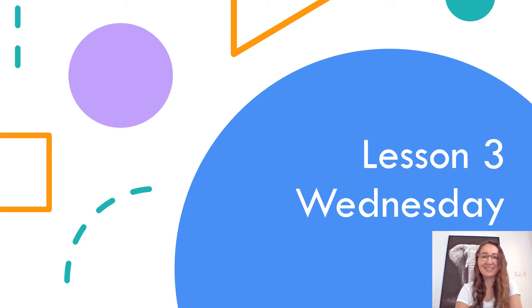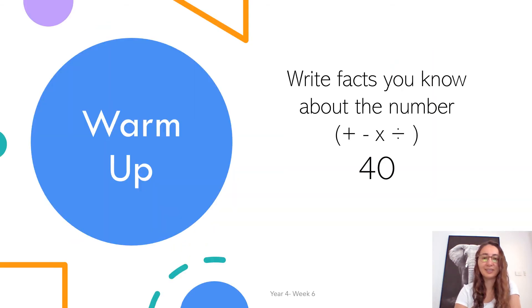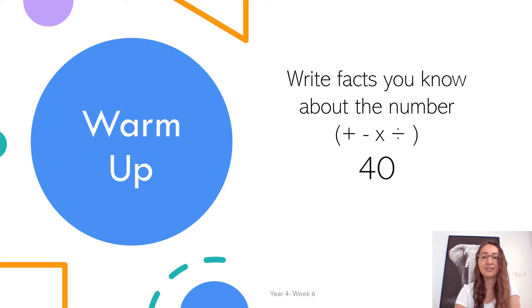Hey everyone, welcome to Wednesday's lesson for maths. Remember that you can pause this video whenever you need. You can re-watch, pause and then keep going with the activity, and whatever it is you need to make the task easier. Our warm-up for today is writing the facts you know about the number 40. You could state the place value, the number before, the number after, sums that add to 40, equal 40 — whatever it is. You can do your warm-up on paper and submit it into your doc, or write it into your doc. Have fun, and I'll see you at the next slide.